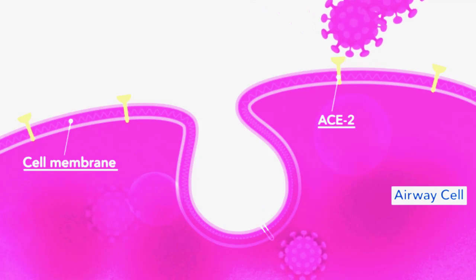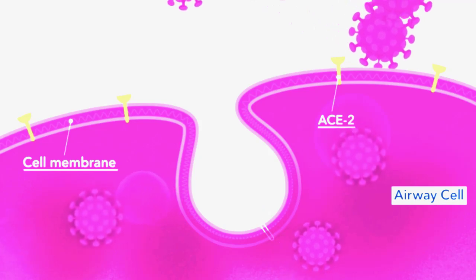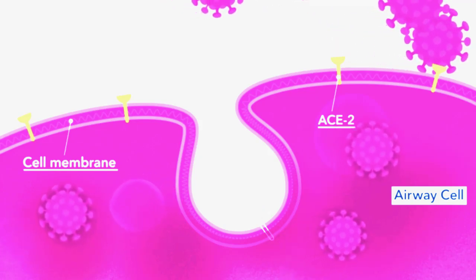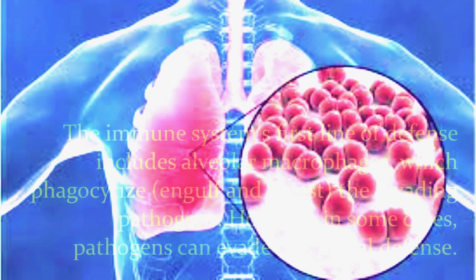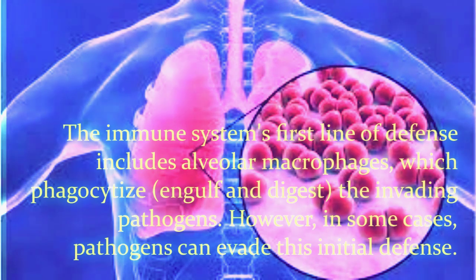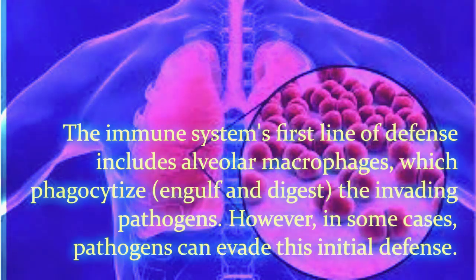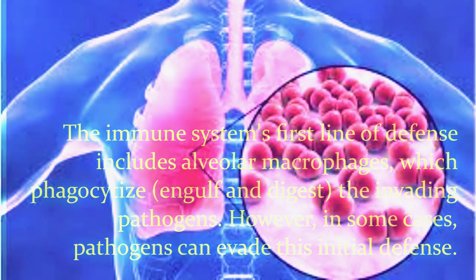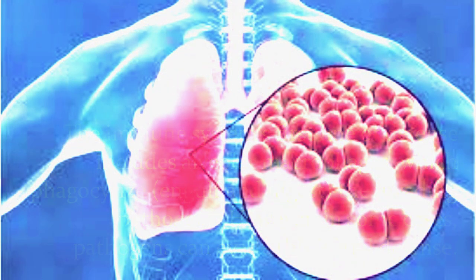As the pathogens proliferate, the body's immune response intensifies. This leads to the release of pro-inflammatory cytokines and chemokines — signaling molecules that recruit white blood cells, such as neutrophils and monocytes, to the site of infection.